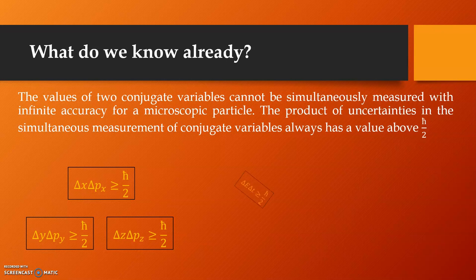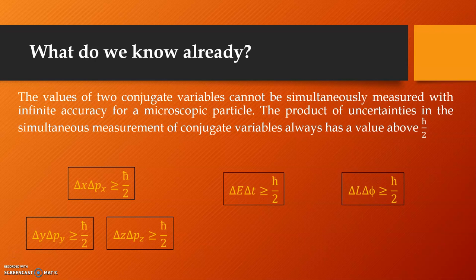If we talk in terms of energy and time, the Heisenberg Uncertainty Principle looks like so, and in terms of the angular position and angular momentum, this is the inequation for Heisenberg's Uncertainty Principle.